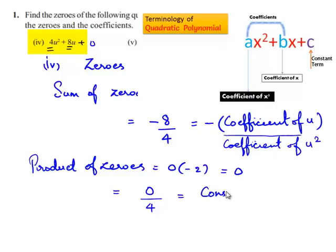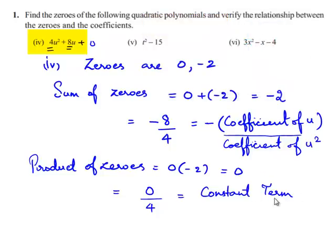So 0 is the constant term, which is the constant term divided by the coefficient of u². Therefore the product of zeros is related to the coefficients as constant term divided by coefficient of u².